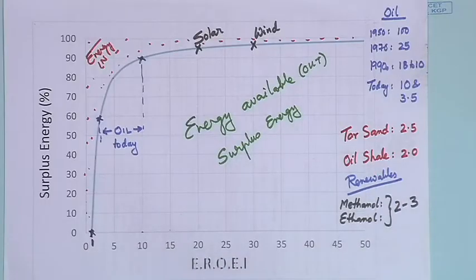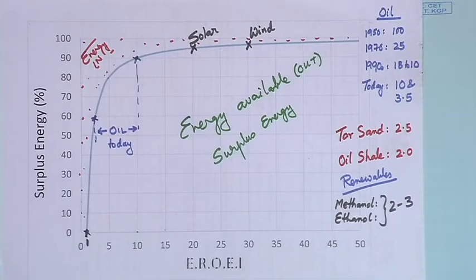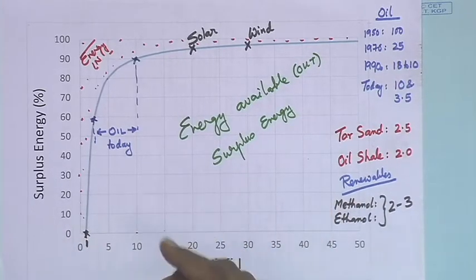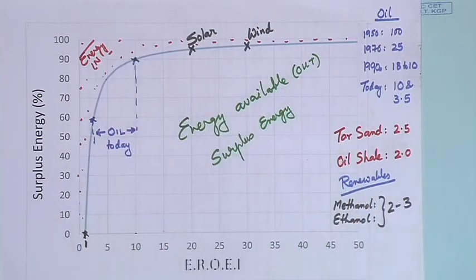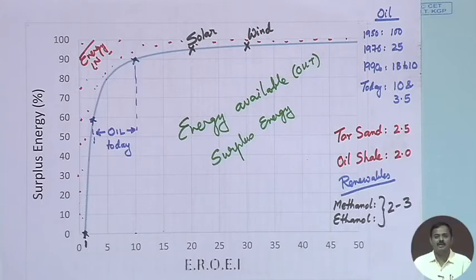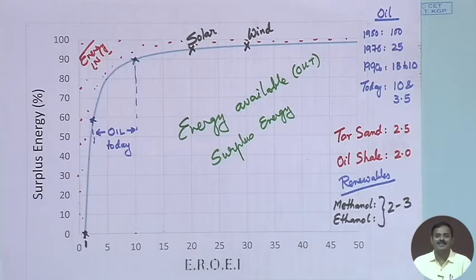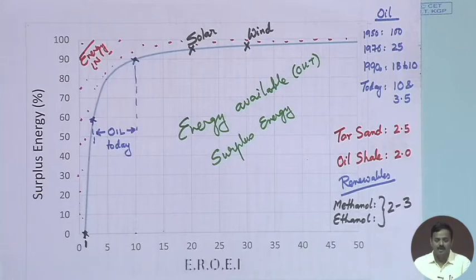The key point here is that surplus energy is what drives the growth of an economy and a nation. Hydrogen does not even appear on this curve — its EROEI is essentially zero because there is no natural source of hydrogen. Oil is toward the energy cliff, while solar and wind are good propositions. Methanol and ethanol are above one but still not very attractive.